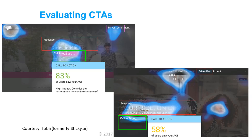They found that Lyft did a better job — 83% of visitors to their page saw the sign-up now button. Only 50% of folks on the Uber page saw the sign-up button. So Uber needs to do some work to make their button more visible. You can use this sort of testing on your pages to verify that your designer is making the important elements visible and discoverable to the visitor.